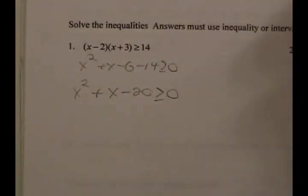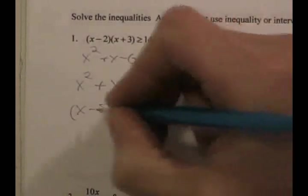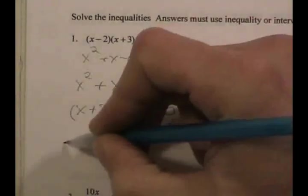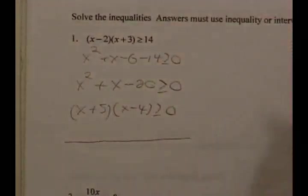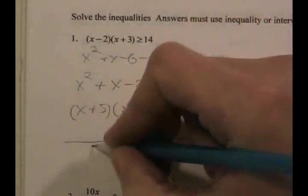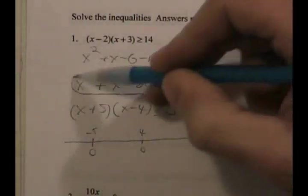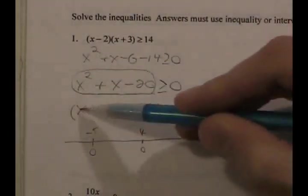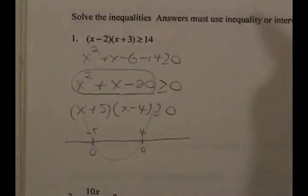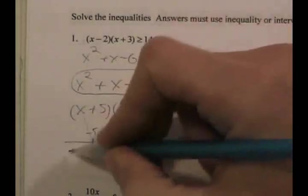We combine these to get x squared plus x minus 20, greater than or equal to zero. We try to factor it because it's all about the zeros, and it factors into (x + 5)(x - 4) greater than or equal to zero. If we plot this out, the expression equals zero at 4 and at -5. The graph is a parabola that opens up, so a sign chart gives positive, negative between them, and positive again.